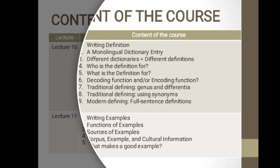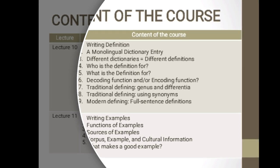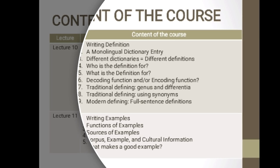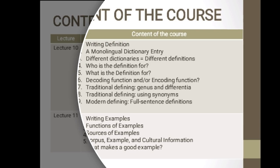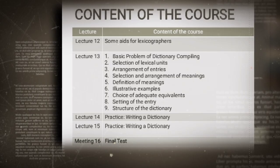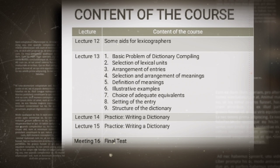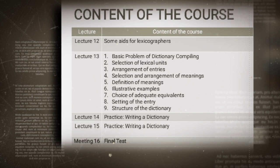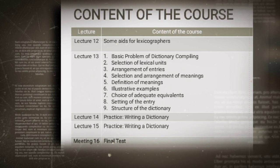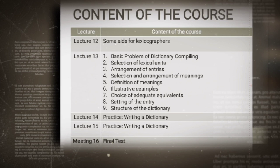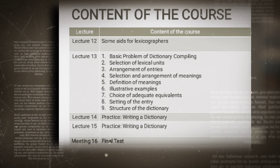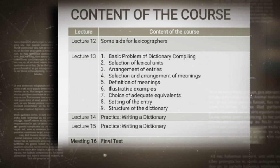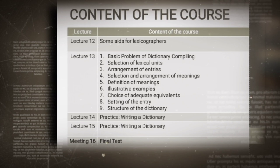Meeting number eleven will be about writing examples: the functions of examples, sources of examples, corpus examples, cultural information, and what makes a good example. Meeting number twelve is about tools for lexicographers — I'm planning to show you the Sketch Engine corpus and also AntConc and WordSmith software, in order to help you build or establish your own database.